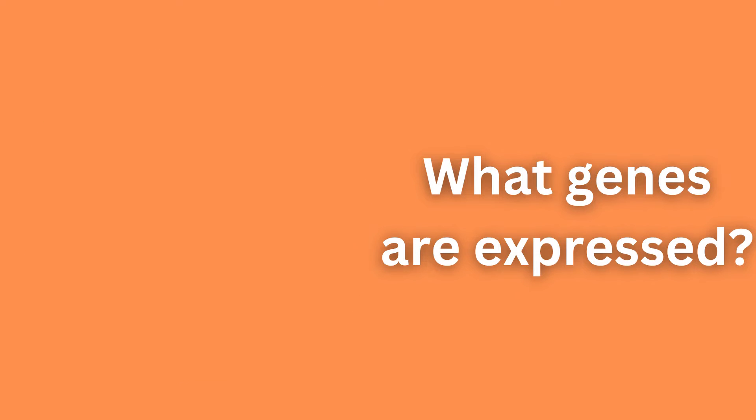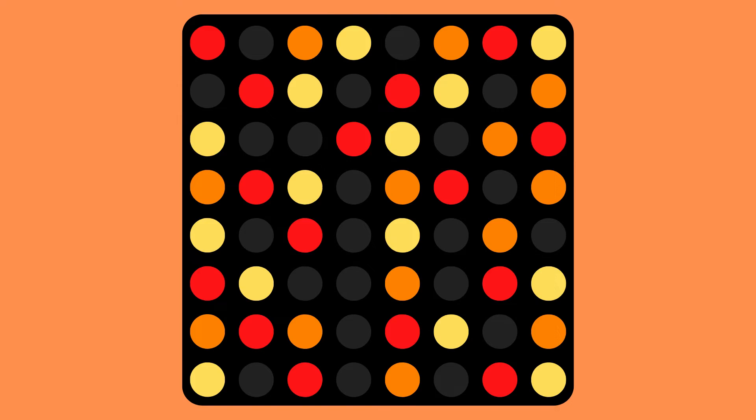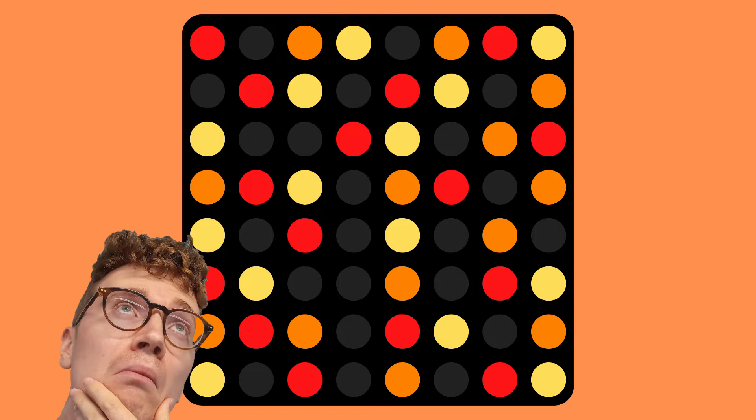What genes are expressed by a specific cell? That is one of the questions which DNA microarrays or DNA chips can answer. The results may look something like this, but how do we even interpret this DNA chip?